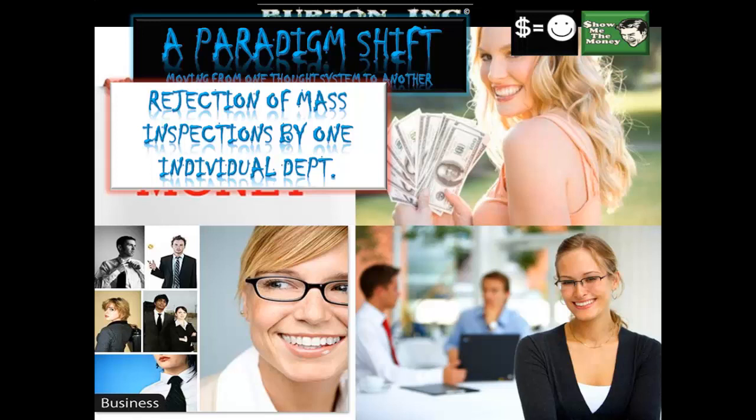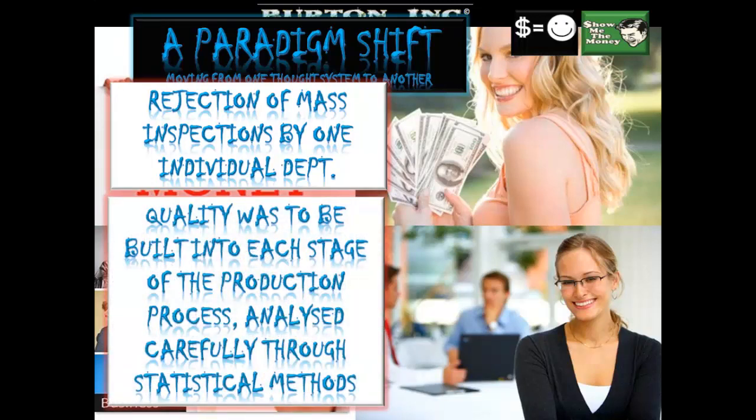Quality control was based on inspection of the product or a sample of the products. Whereas quality assurance is a system of agreeing and meeting quality standards at each stage of the production to ensure consumer satisfaction. Quality is to be built into each stage of the production process, and quality is analyzed carefully through statistical methods.